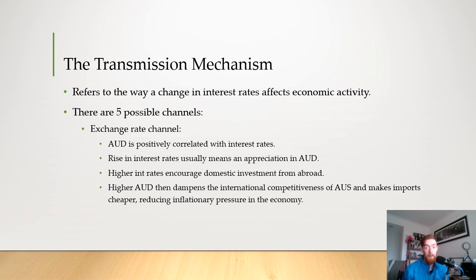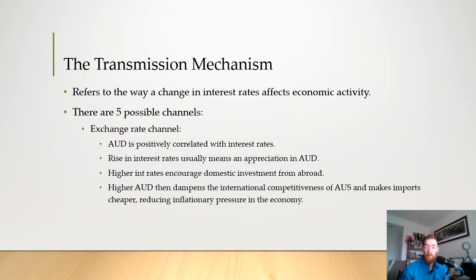In the original scenario, higher interest rates lead to a higher Australian dollar, which dampens international competitiveness and makes imports cheaper, reducing inflationary pressure. This has been a significant issue — the Australian dollar is often too high, which makes it hard to export and means we import more. When the Australian dollar is high, we import even more because it's cheaper to do so, which is good for lowering inflation, but inflation is already pretty low. So we want the Australian dollar to be as low as possible at the moment.